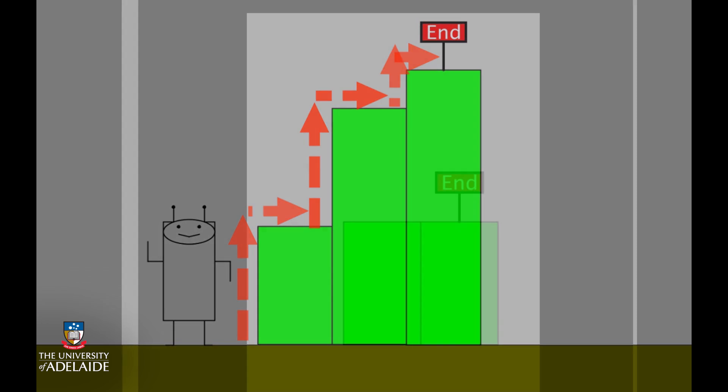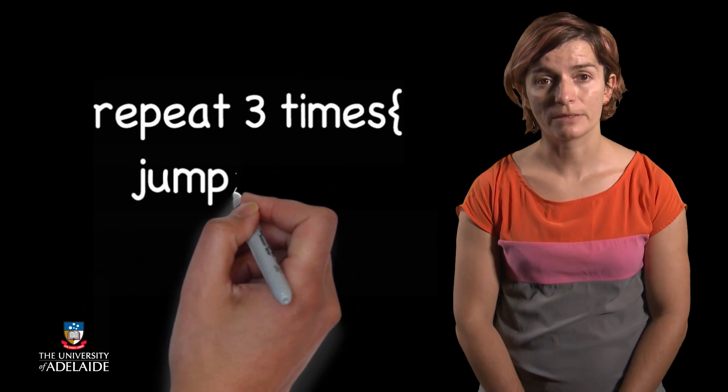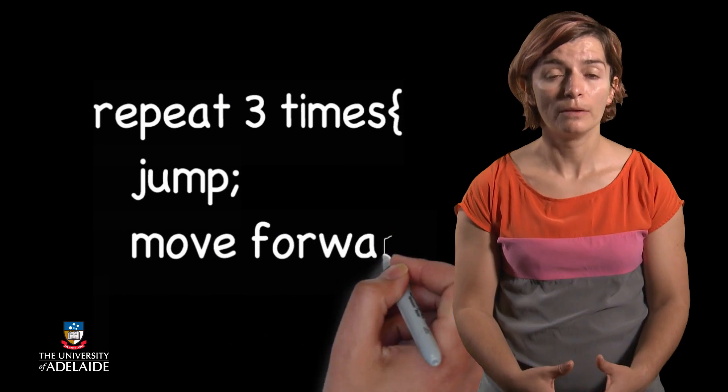If we were to plan our algorithm, we would write something like this. Repeat three times. Jump. Move forward.